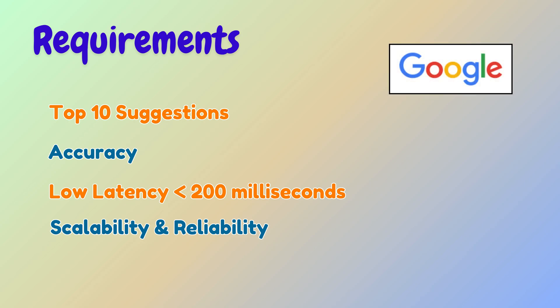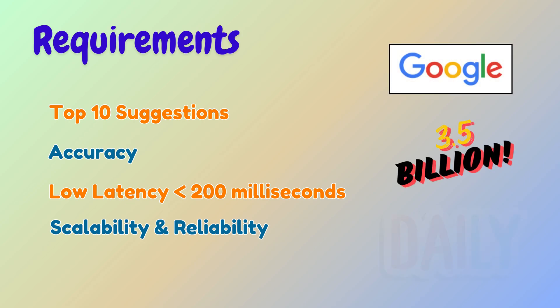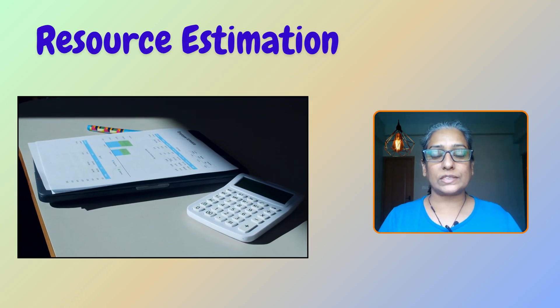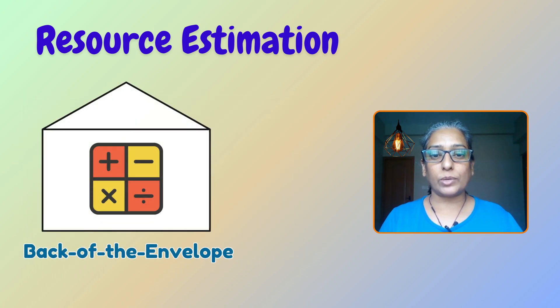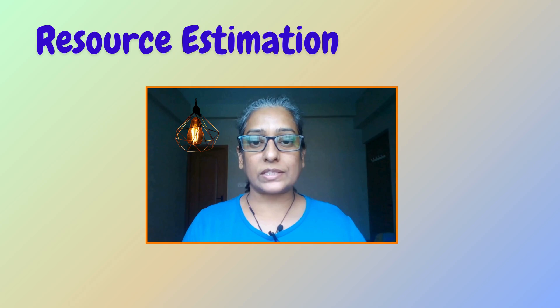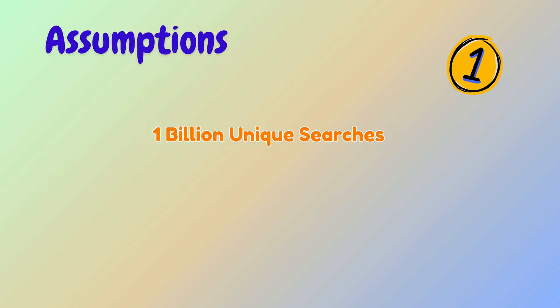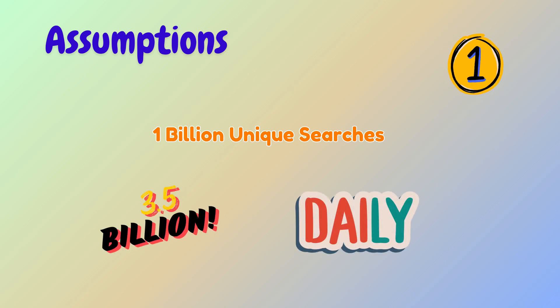The system should efficiently handle Google's scale, processing around 3.5 billion searches per day. The next step is estimating the storage and bandwidth requirements. We will use a back-of-the-envelope approach. Around 1 billion searches among the 3.5 billion per day are unique and need to be stored.